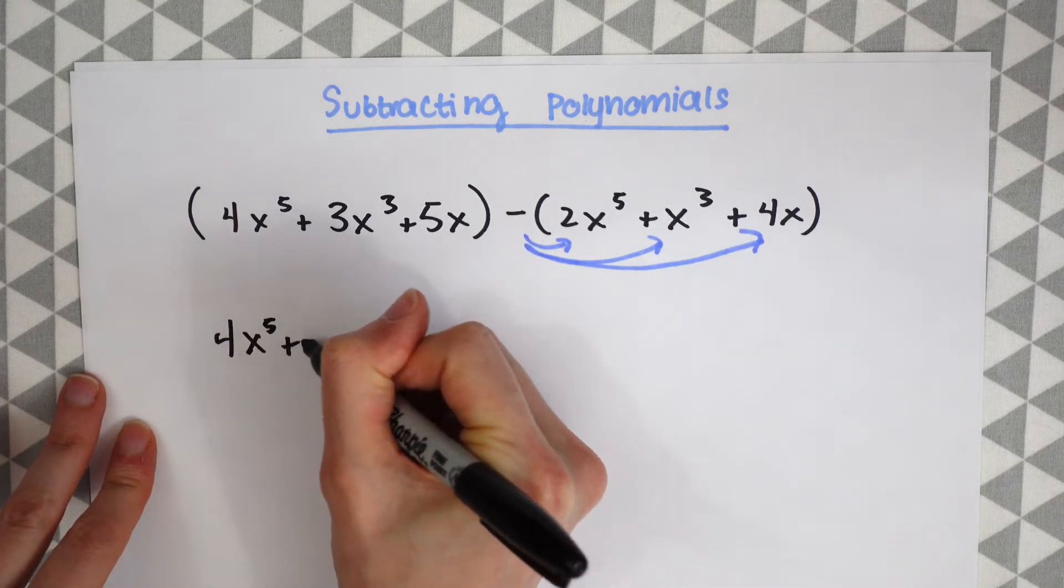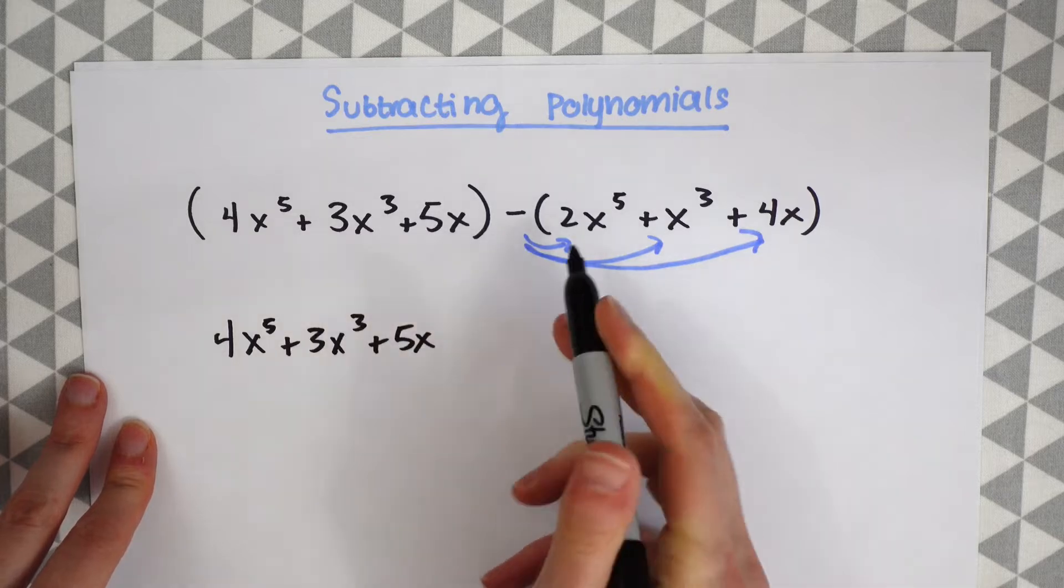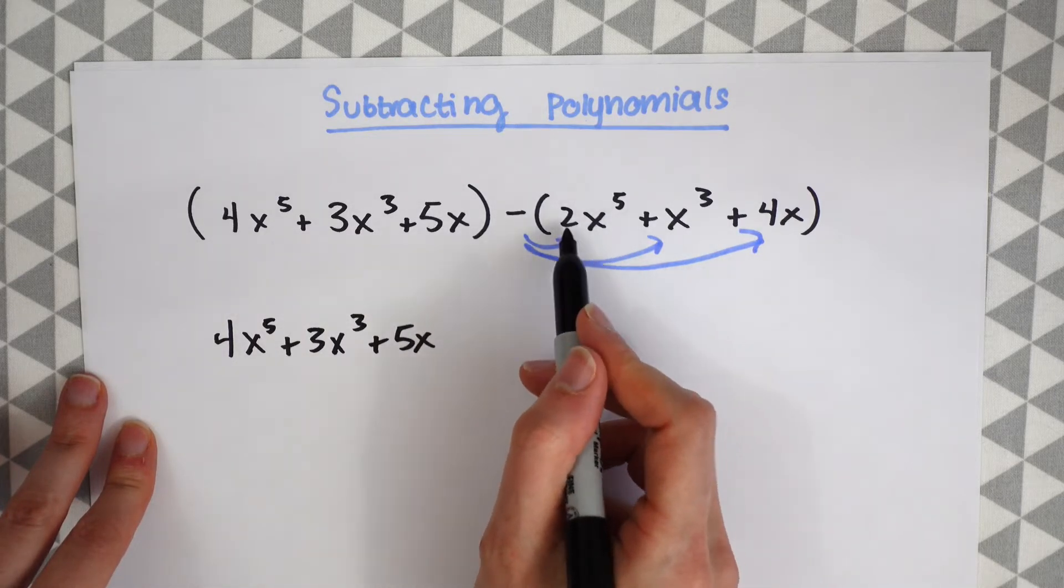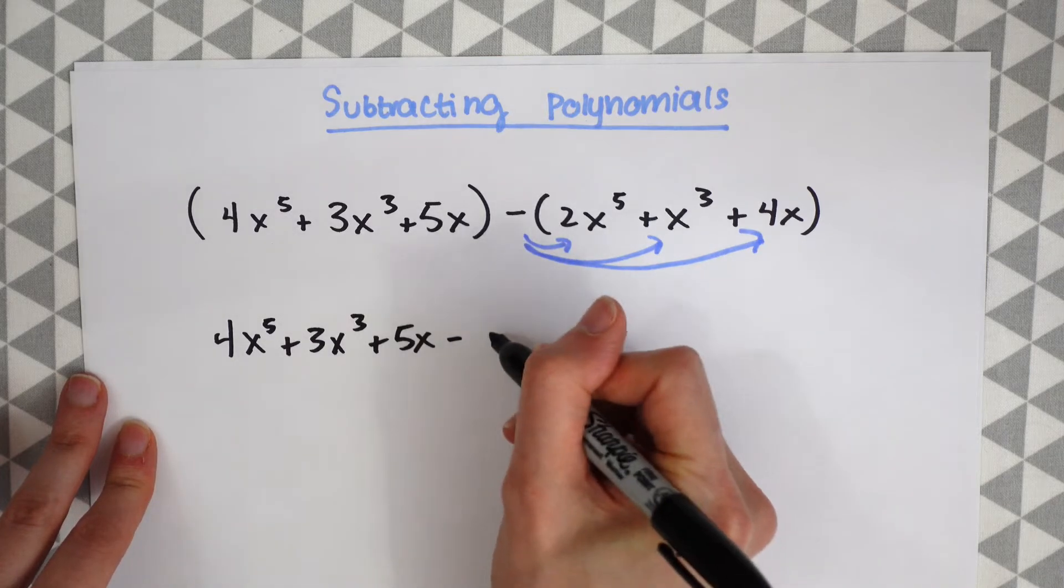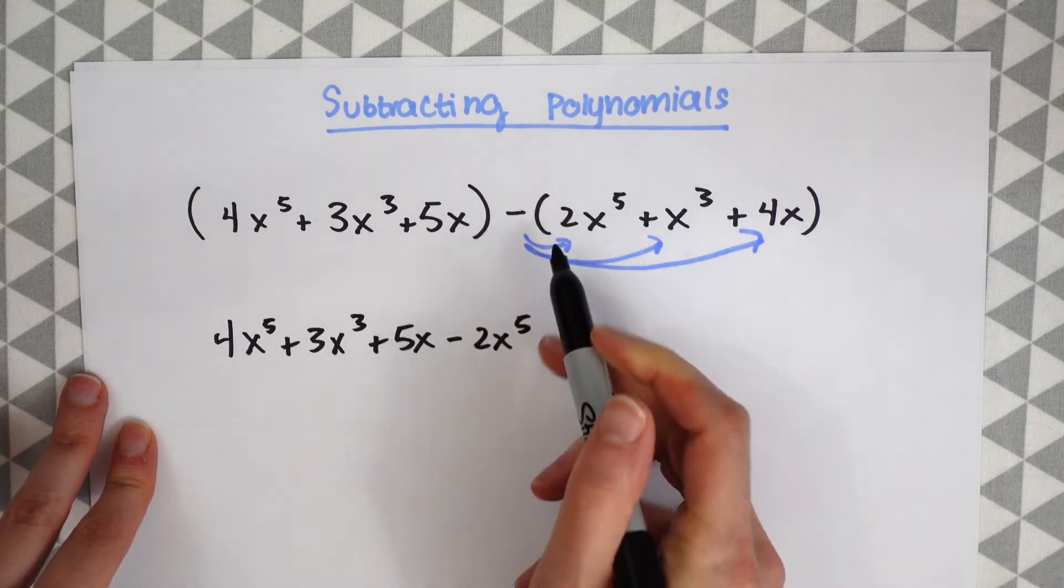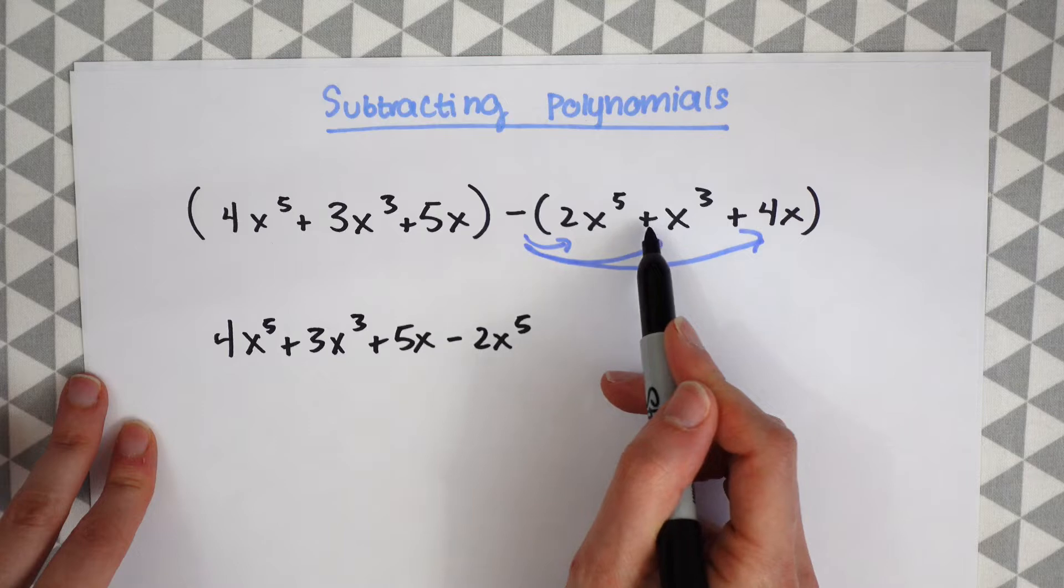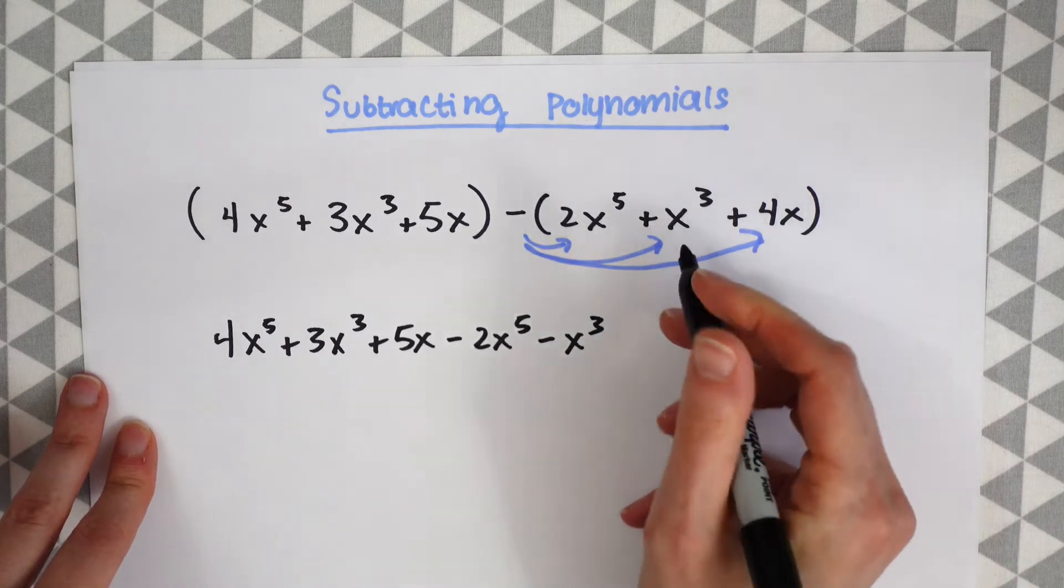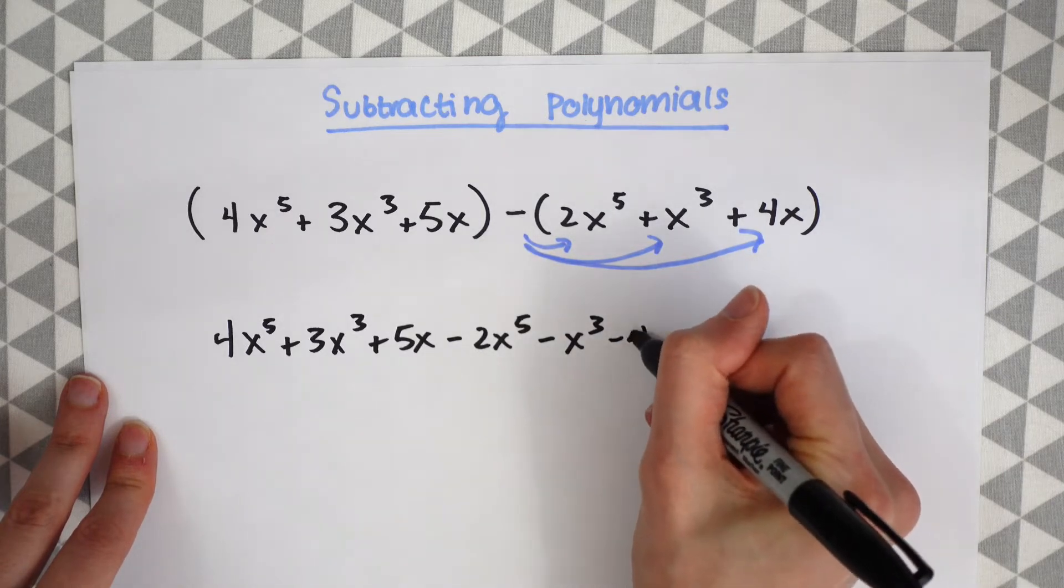So we have 4x to the 5th plus... And now we're just distributing this minus sign. So this 2x to the 5th is positive but now it's going to become negative. And the same for this x cubed. It was positive. Now it's going to be minus x cubed. And the same thing for this 4x. Minus 4x.